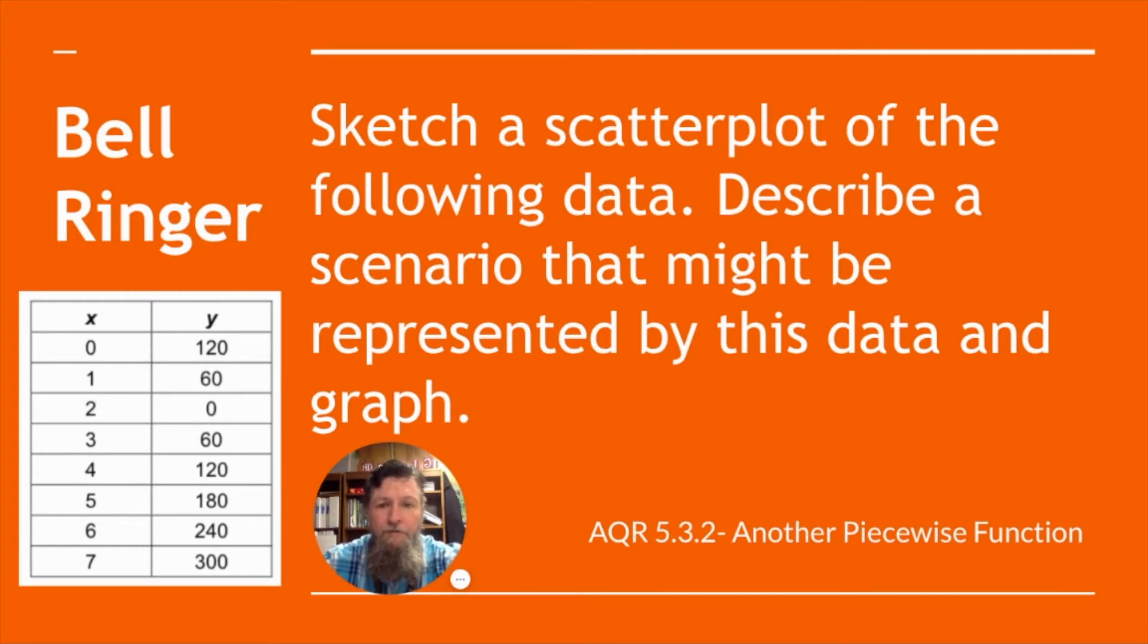Sketch a scatterplot of the following data. Describe a scenario that might be represented by this data. So let's look at the data. The X column, our horizontal part of the graph, is just 0 through 7. It's a sequential order from 0 to 7. And the Y column, however, shows Y starts at 120 at 0, where X is 0. And where X is 1, Y is 60. So it went down 60. And then at 2, it's at 0, which is down another 60.